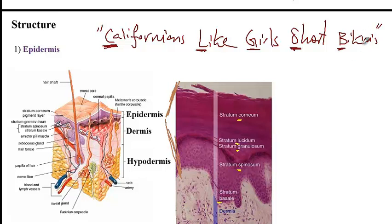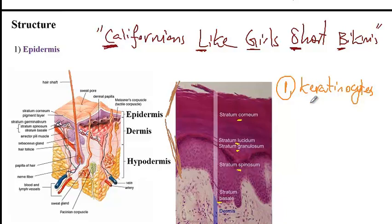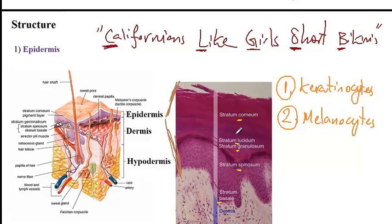Starting with stratum basale, this is the deepest layer of the epidermis in contact with the dermis. It contains four types of cells. First, keratinocytes, which slowly move superficially, lose their nucleus, and produce keratin — consequently the superficial layer of the skin contains a barrier of dead cells filled with keratin. Next, melanocytes produce melanin, the color pigment that gives skin color and protects us from UV light.